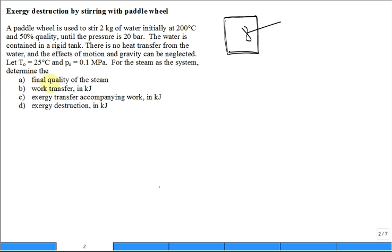So for the steam as the system, determine a couple things. What is the final quality of the steam? We think about the initial state one and the final state two. The initial state, a temperature of 200 degrees C and a quality of 50%. State two we don't know the temperature but we know the final pressure is 20 bar and we don't know the quality. We're asked to find the quality X at state two.